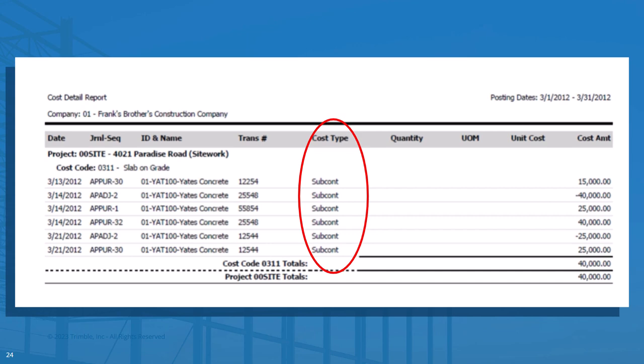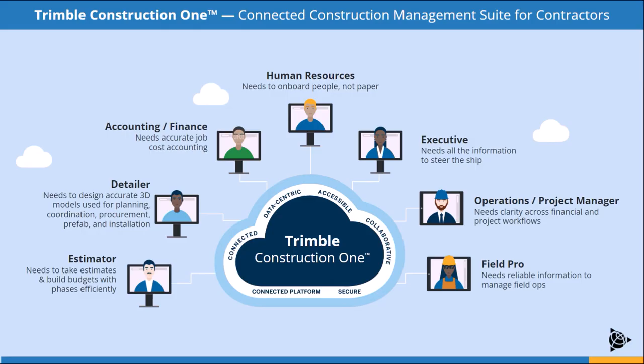Job costing, along with other accounting workflows, can be difficult to manage in a way that maximizes your organization's efficiencies. Trimble Construction One is a connected suite which connects your office to the field to streamline these workflows with the industry's leading solutions, giving you the right data for your projects. Check out what Trimble Construction One can do for you.